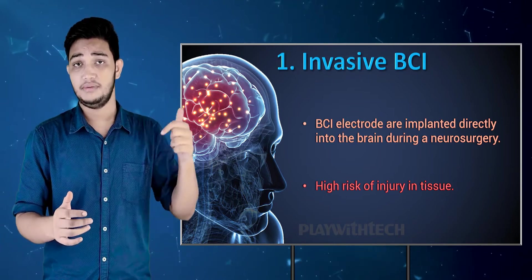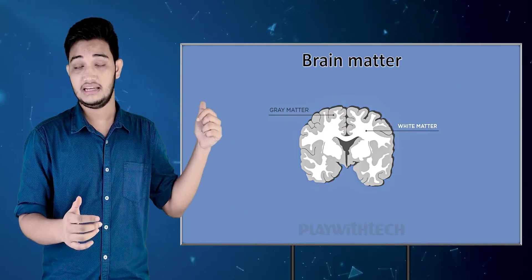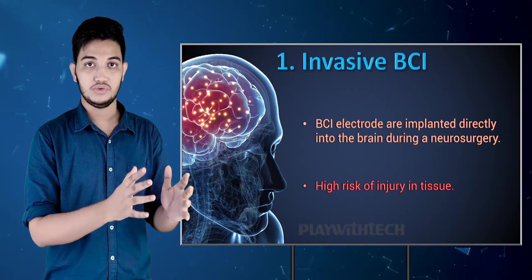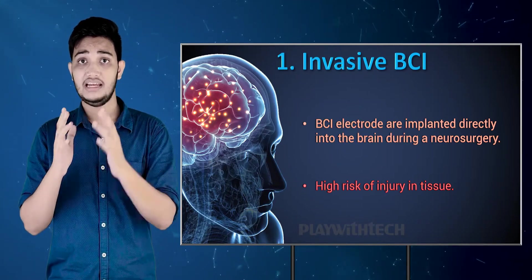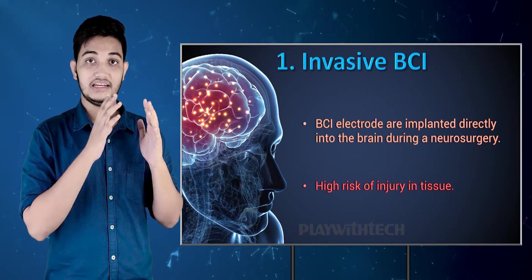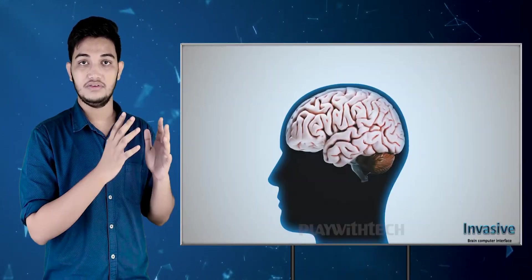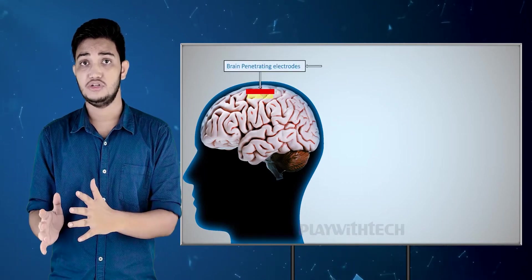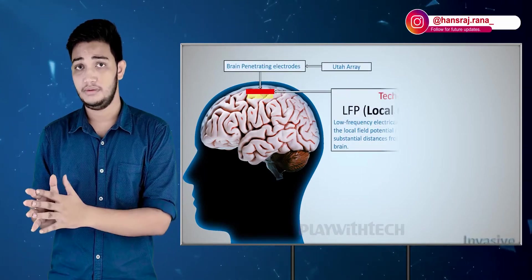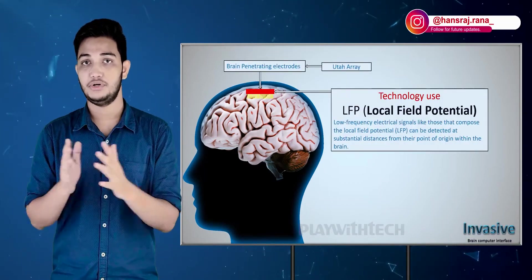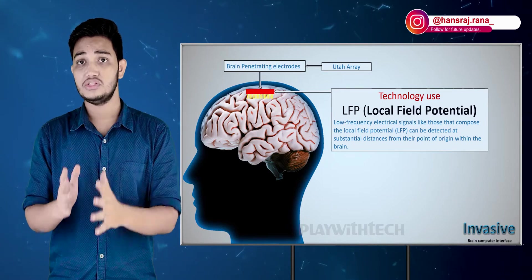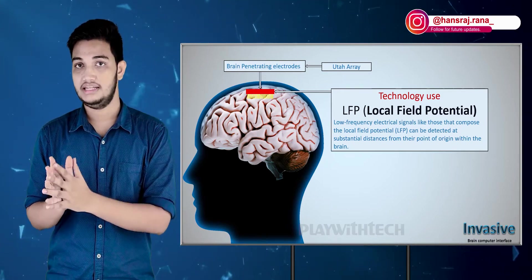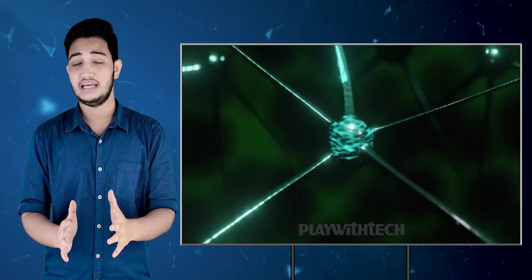The risk in tissue is very high because the electrode is directly in your brain as an inorganic metal. This array is called the Utah Array, which works on LFP technology — Local Field Potential. This technology captures any voltage at a minimum distance, as I explained in my previous video.